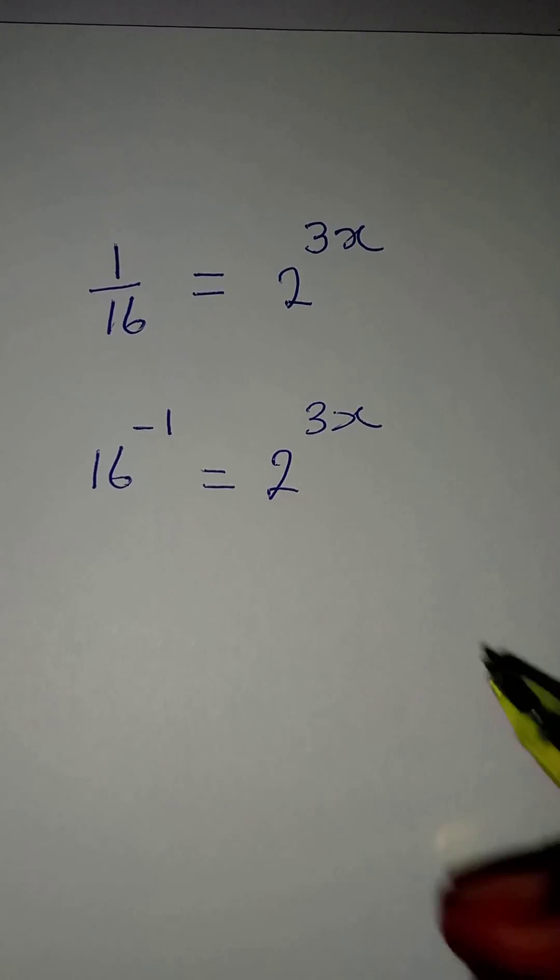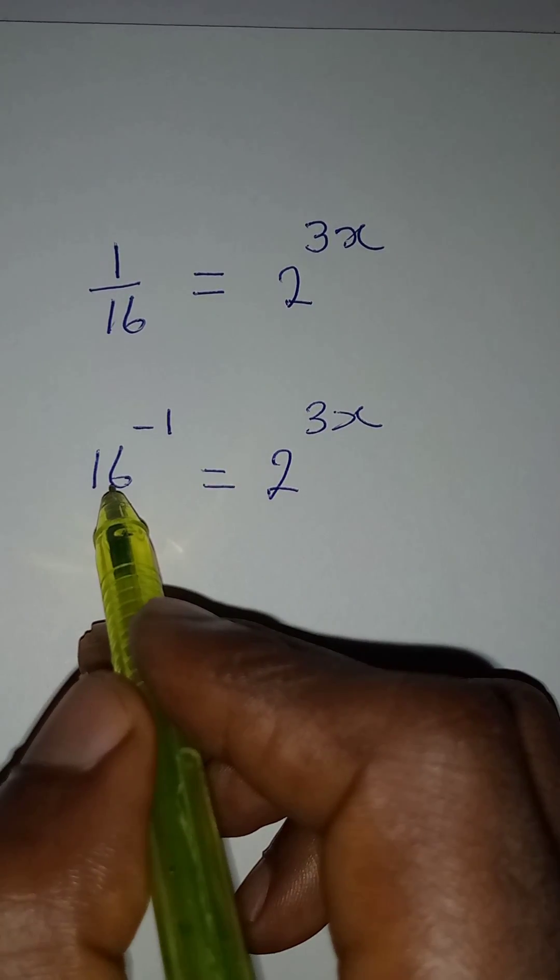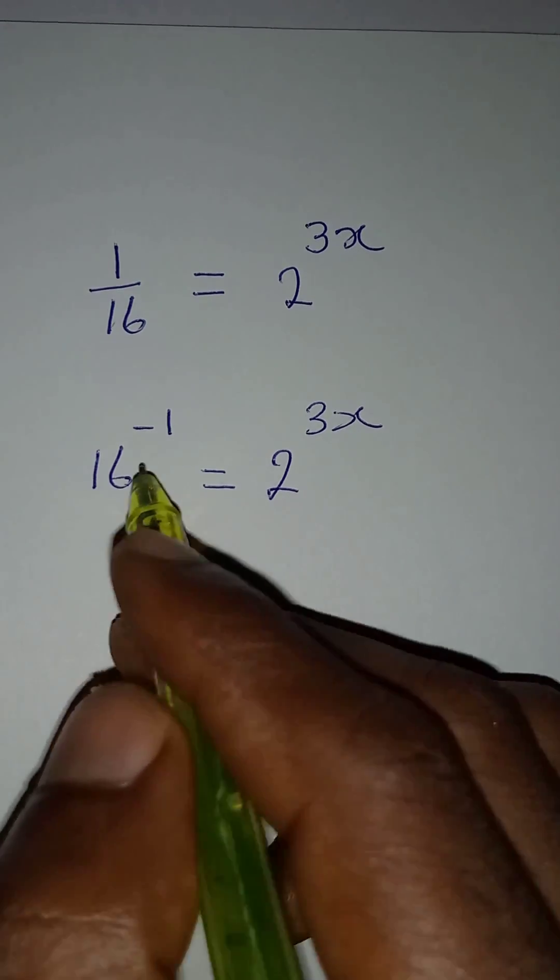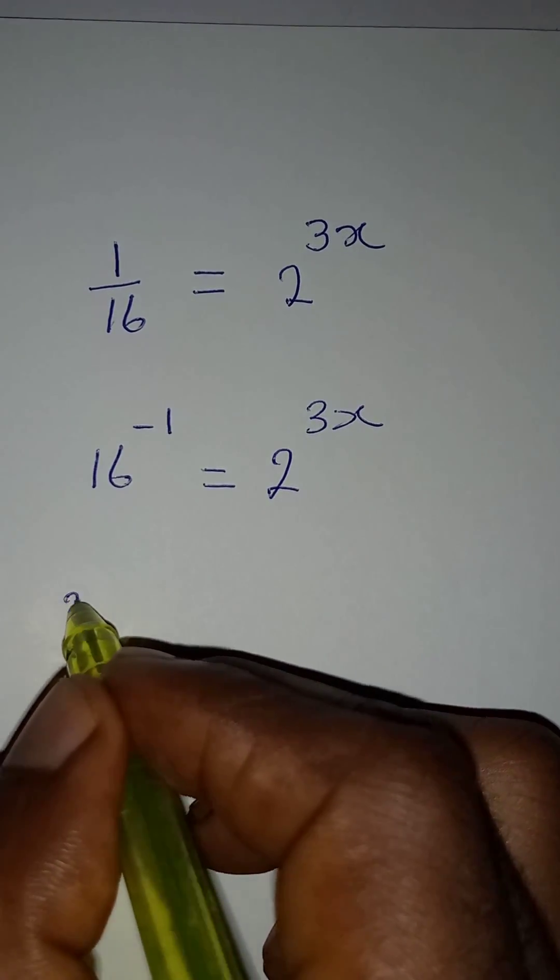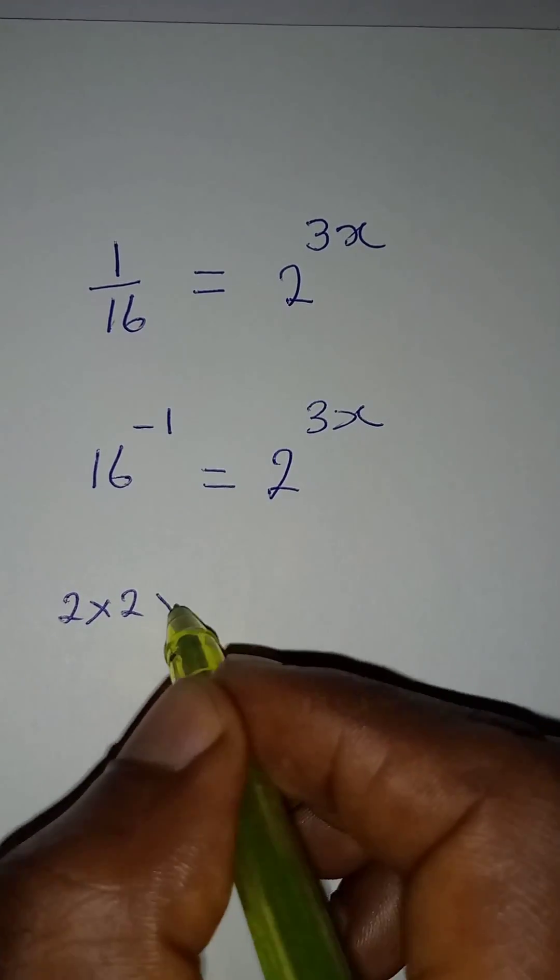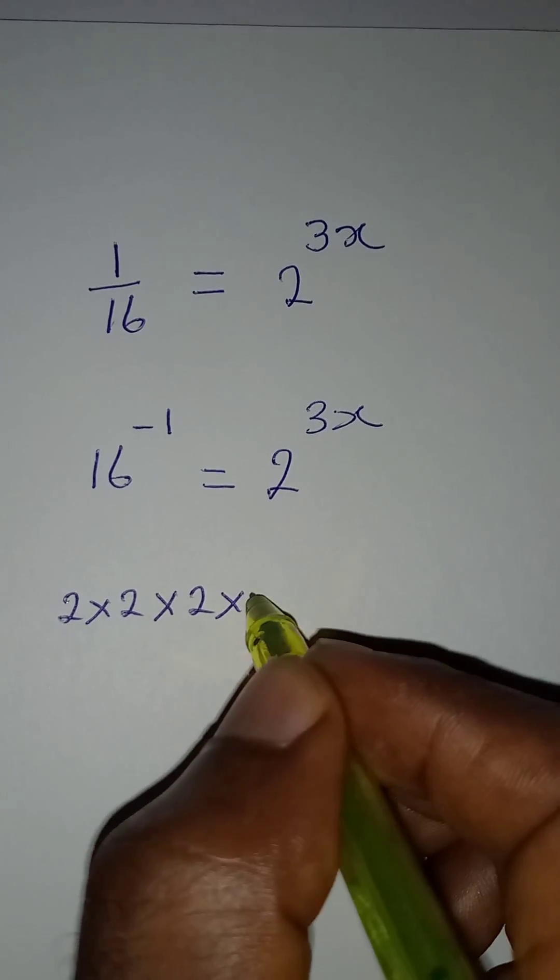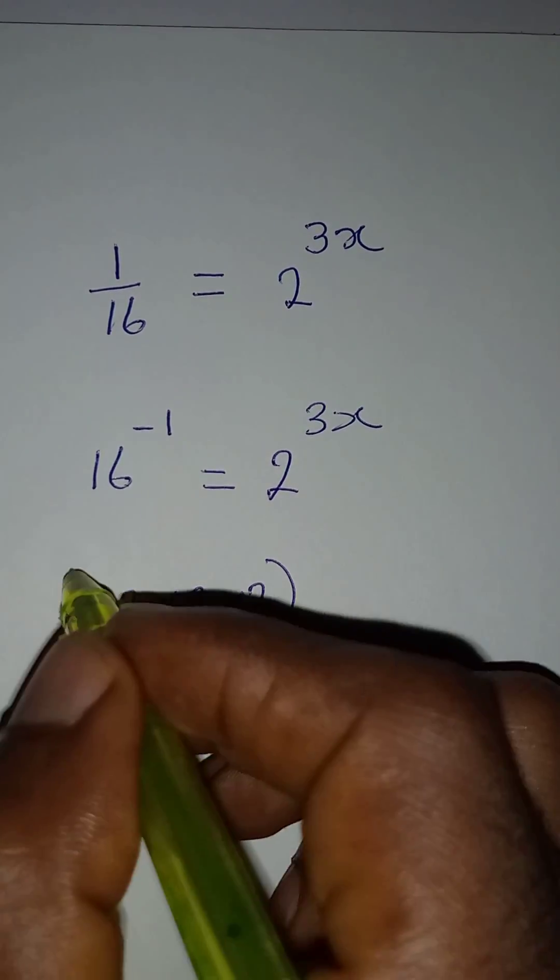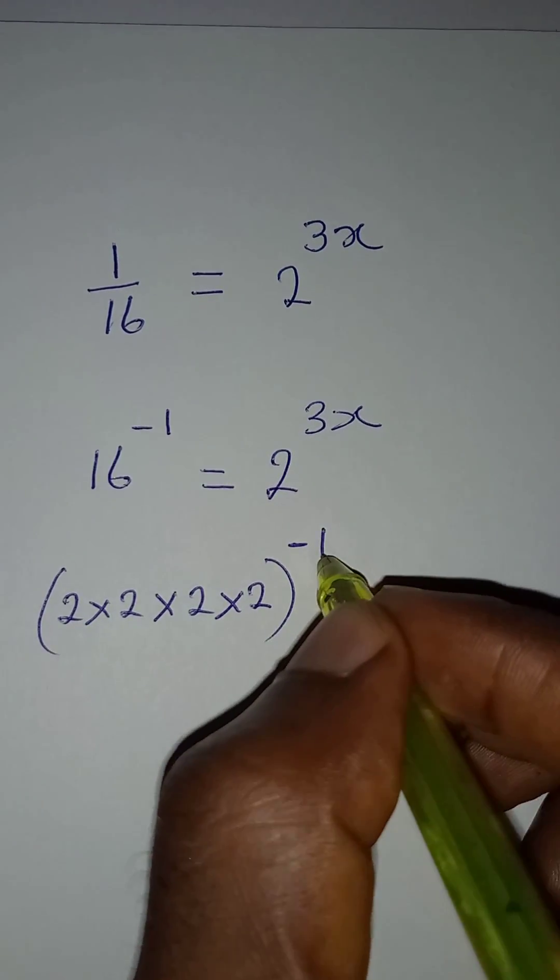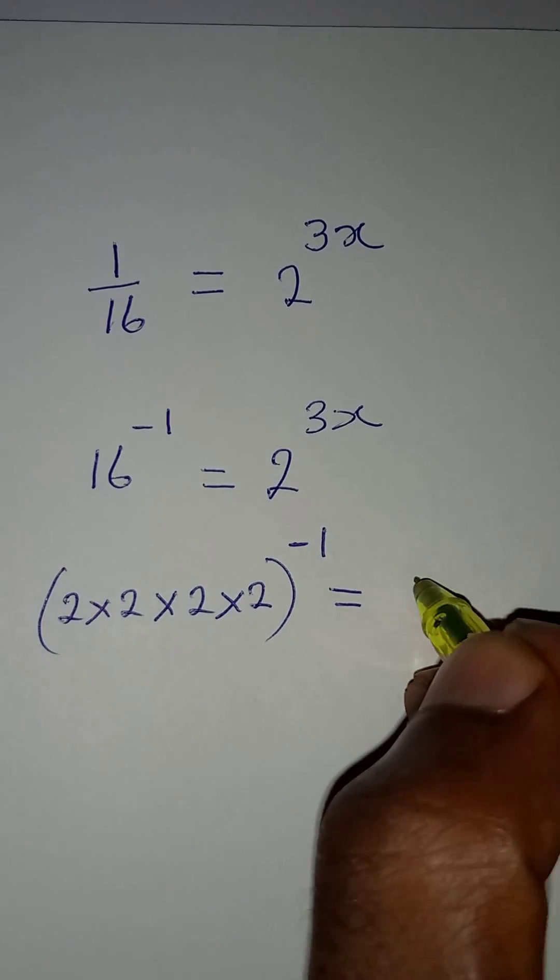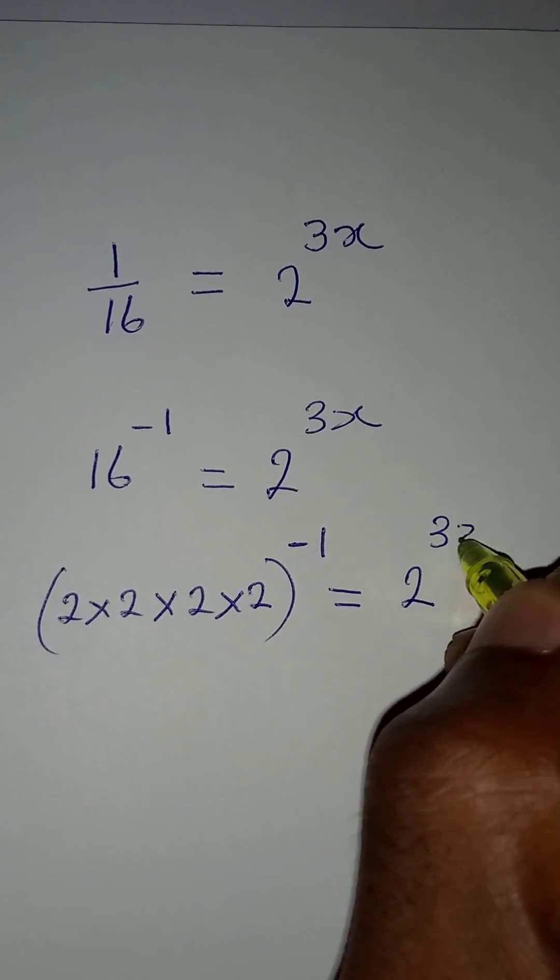Then, if I take it a step further, this 16 here can be written in index form because it is 2 times 2 times 2 times 2. Then, this will be to the power of negative 1, which will be equal to 2 to the power of 3x.